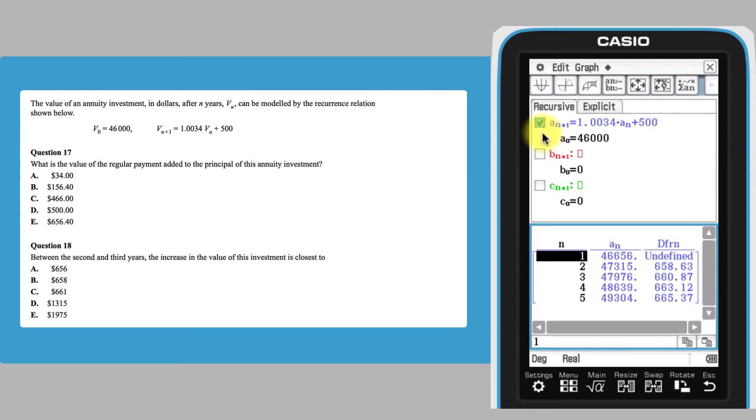From this output, we can see that the difference between the A3 value and the value of the year before is closest to 661, which is answer C.